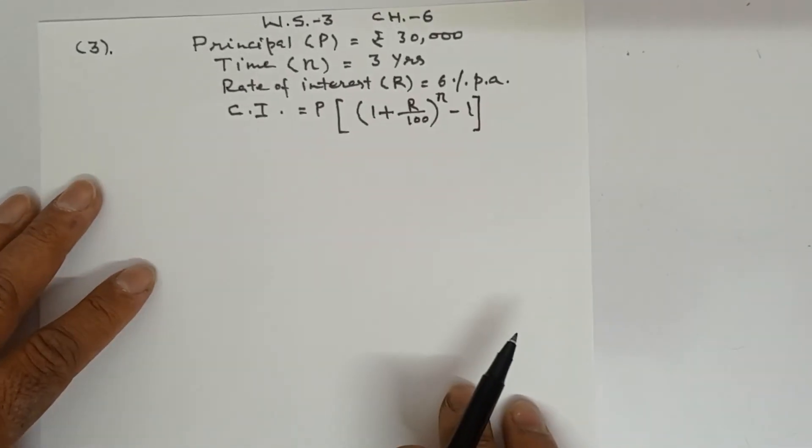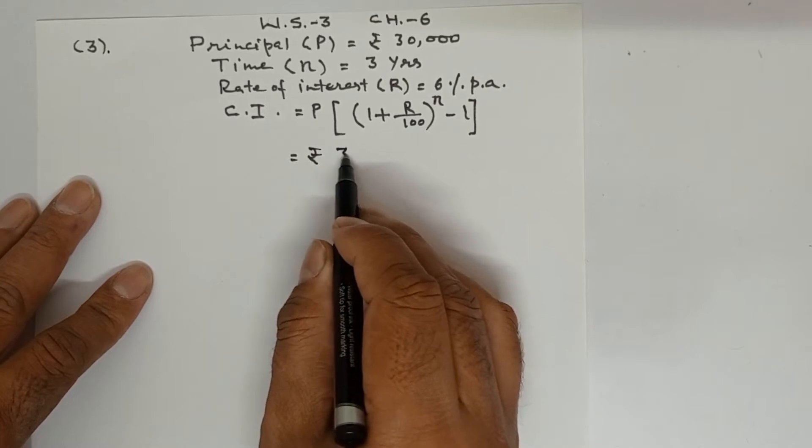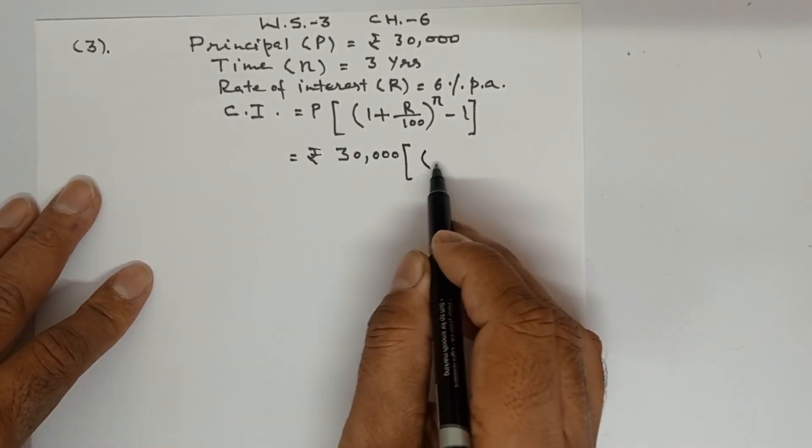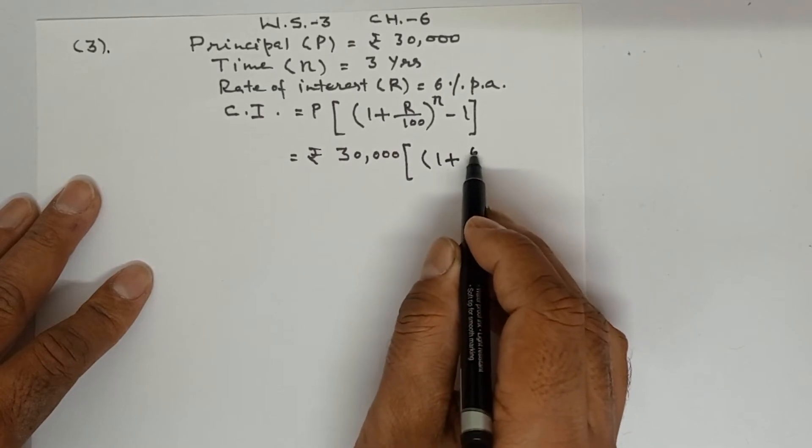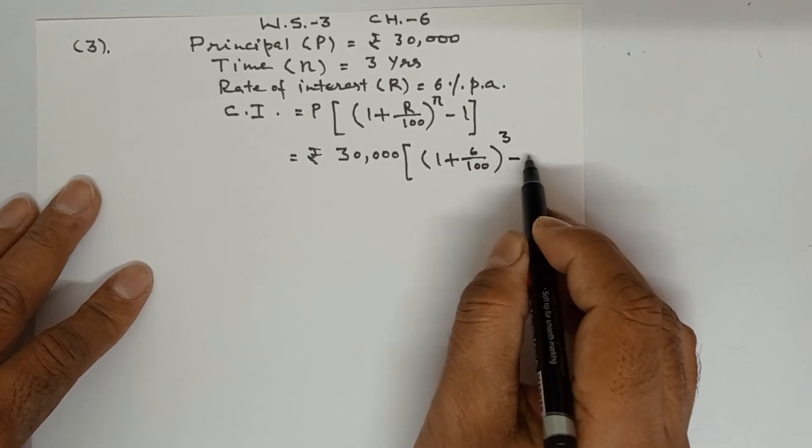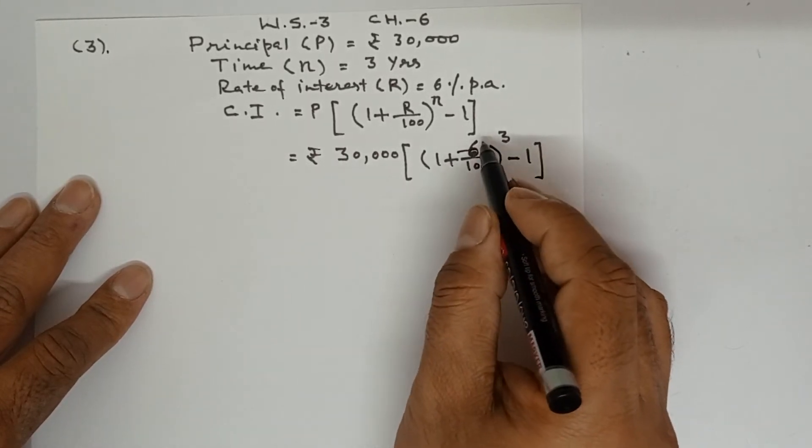Same formula. So substitute the values. Rs. 30,000 times 1 plus R is 6 upon 100 power is 3 minus 1.